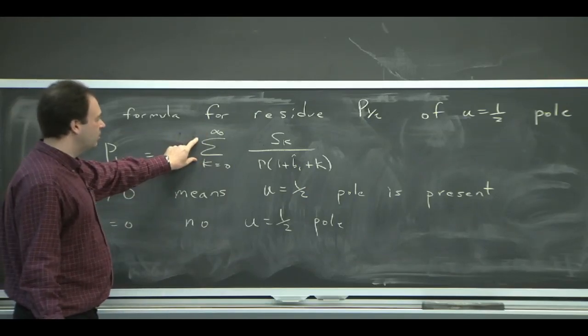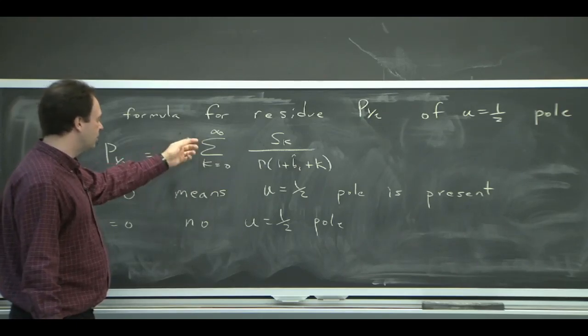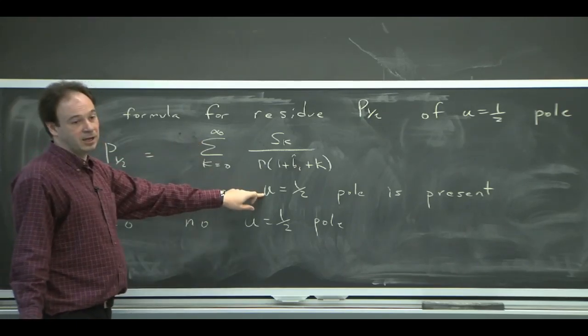But actually, even with the knowledge that we have of the series, for example, for the B quark mass, you can very quickly see that it has a U equals a half pole.